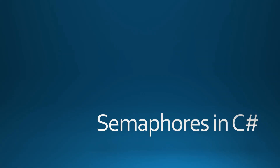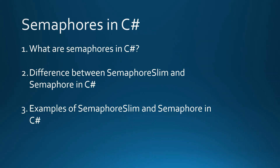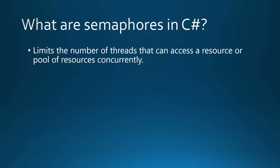Hello guys, in this video I'm going to explain semaphores in C#. Firstly I will explain what semaphores are, then the difference between SemaphoreSlim and Semaphore classes, and then show examples of both. Semaphores are used to limit the number of threads that can access a resource or pool of resources concurrently.